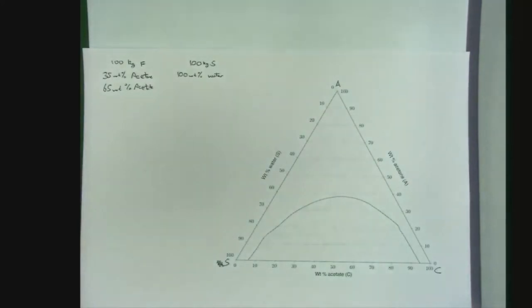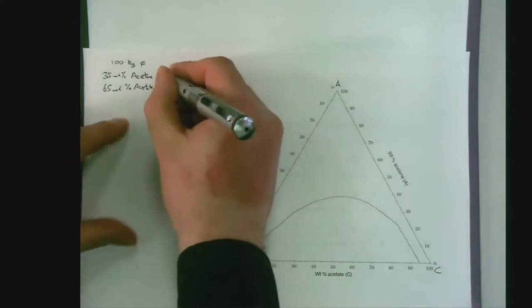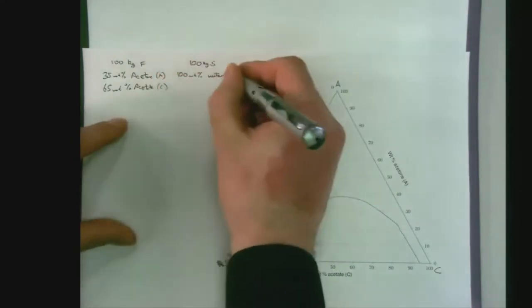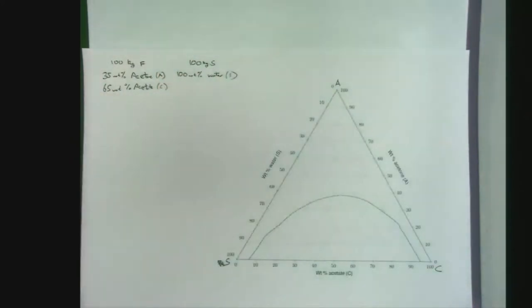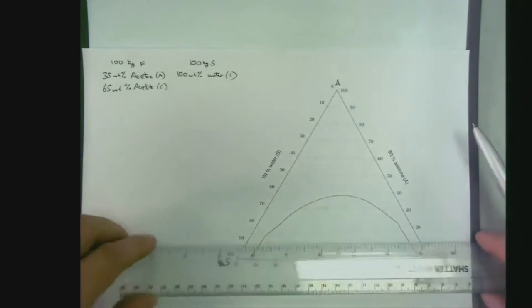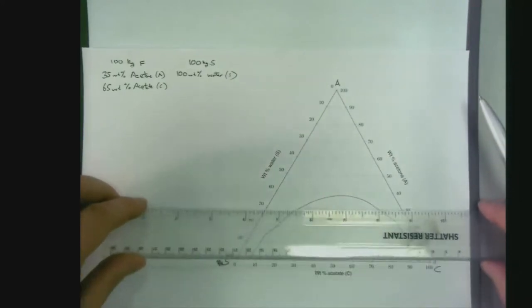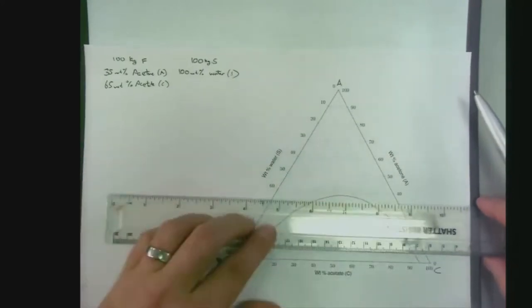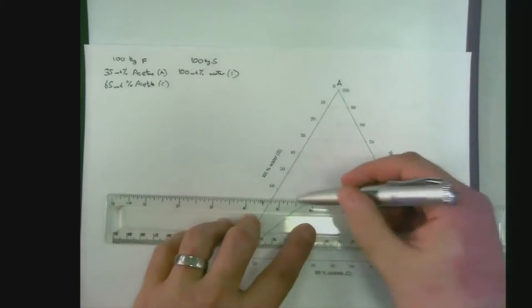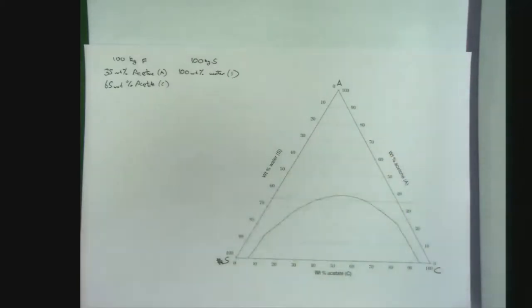We need 35 weight percent of our acetone, which is our A. If it's in the top corner, we know that the bottom scale represents 0, so 10, 20, 30, 35. So approximately that line is about 35.